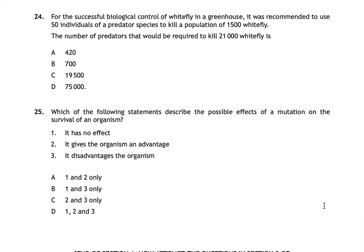Question twenty-four: for biological control of white fly, 50 predator individuals are recommended to kill 1,500 white fly. How many predators are needed to kill 21,000 white fly? The correct answer is B: 700. Divide 21,000 by 1,500 to get 14 — it is 14 times more than the original. Multiply 50 by 14 to get 700, maintaining the same ratio.